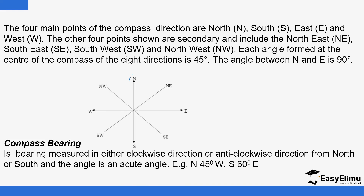With regards to bearing, these four main points are important: north, east, south, and west. The four main points of the compass direction are north, south, east, and west. The other four points are secondary directions like northeast. We'll be measuring the angle or the bearing from north going to the east. In between south and east we talk of southeast. So we either start from north or we start from south — north or south. The measurement starts from either north or south.